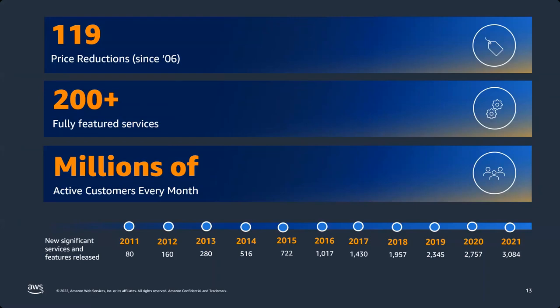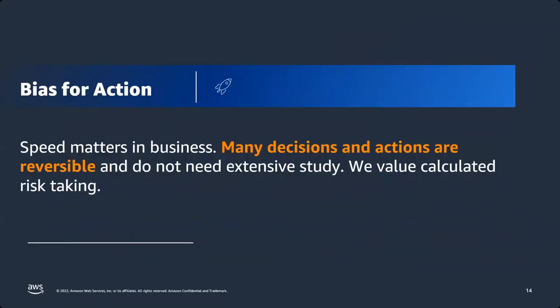If you look at Amazon Web Services — we have 119 services, we did 119 price reductions, and we have more than 200 fully-featured services. If you look at innovation: the features and capabilities we built through the years — in 2011, there were 18 new services, but in 2021, there were 3,084. This requires something that lets us organize how we can take decisions.